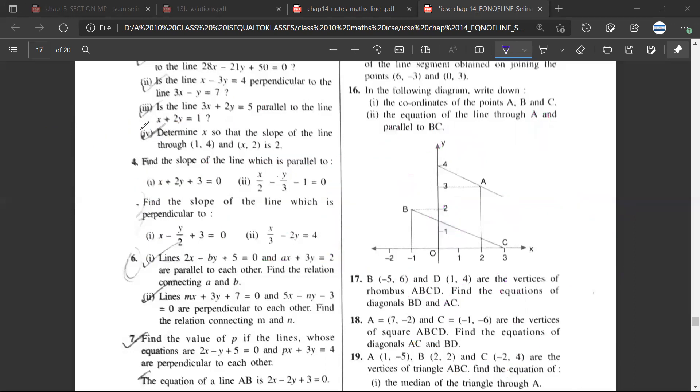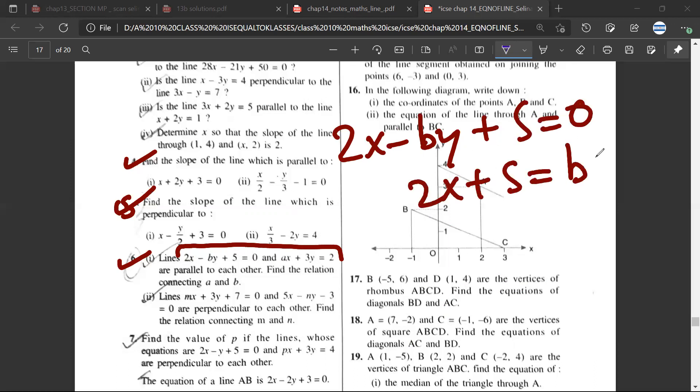Question part two: x upon 3 minus 2y equals 4. I always like to make y positive, so I'll rearrange: 2y equals x upon 6. So the slope is 1 by 6.